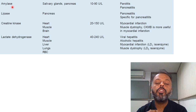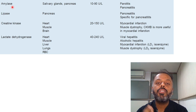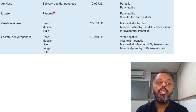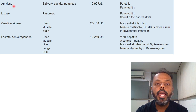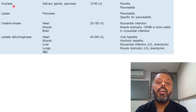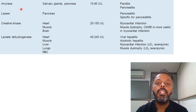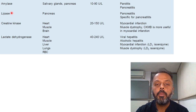Another enzyme useful for the diagnosis of acute pancreatitis is lipase. Lipase hydrolyzes triacylglycerol into beta-monoglyceride. The source of lipase is the pancreas. Its level increases in acute pancreatitis. Lipase is more specific than amylase for acute pancreatitis because its level does not increase in parotitis, and its level remains elevated for 7 to 14 days after the onset of disease.